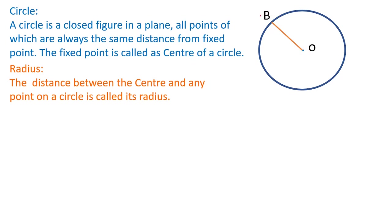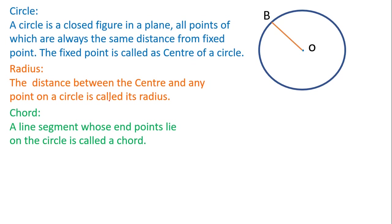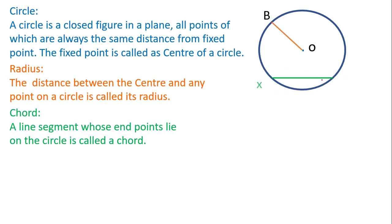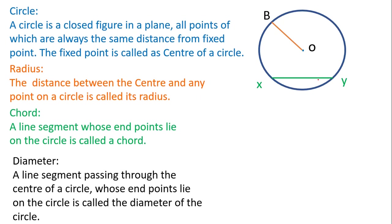The line segment which joins the center and any one point on the circle is called the radius of a circle. Next we will take chord. A chord is a line segment whose both endpoints lie on the circle. Such kinds of line segments are called a chord of a circle.